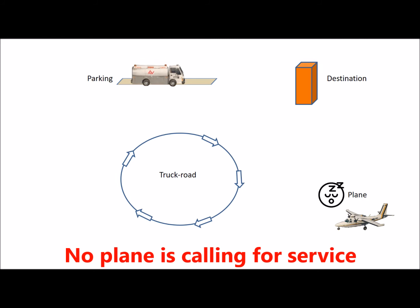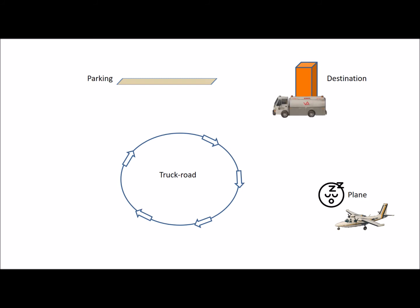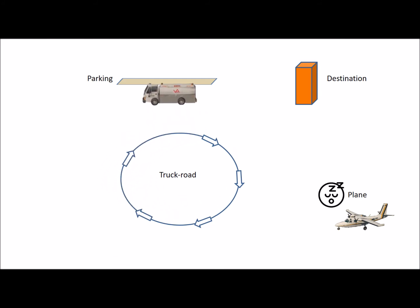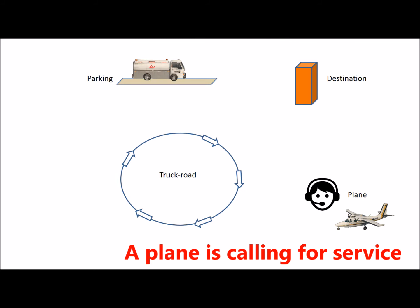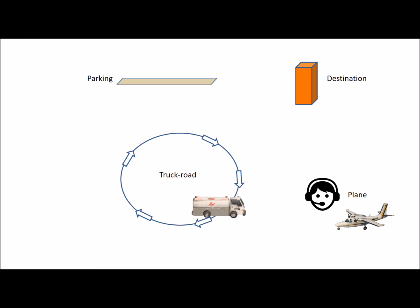We can see in this schema a parking place, a truck road, a destination, and the plane to be served. When ground services have been installed, vehicles go from parking spot to destination using the truck roads in between, even without any plane on the airport. When called by the plane, the trucks will go in a straight line from their parking spot to the nearest bit of the truck road they can find, and go in a straight line from the truck road to the aircraft parking spot.